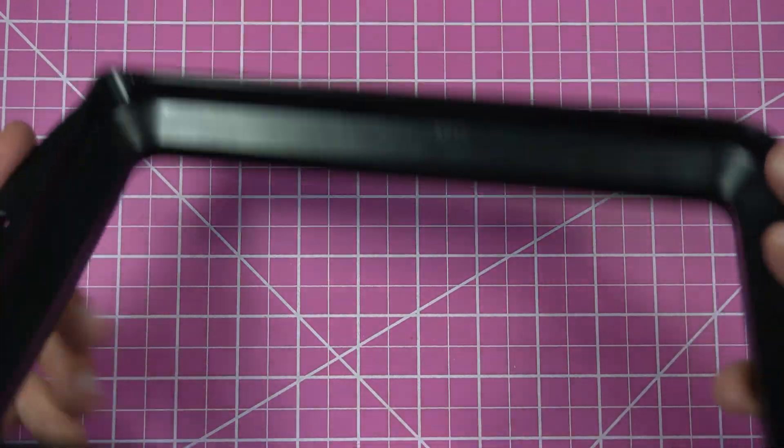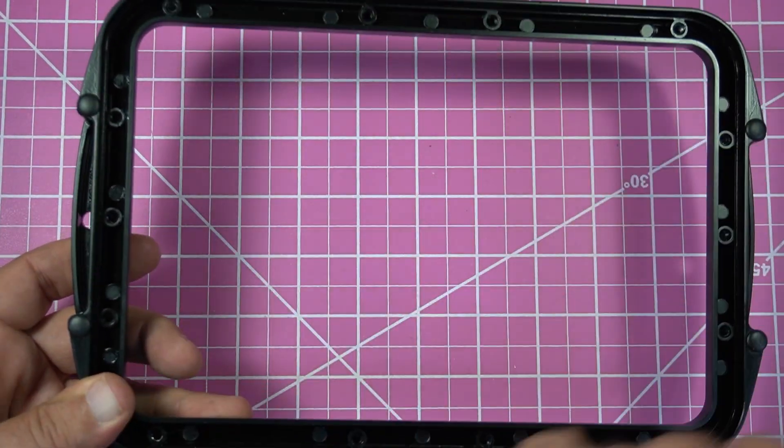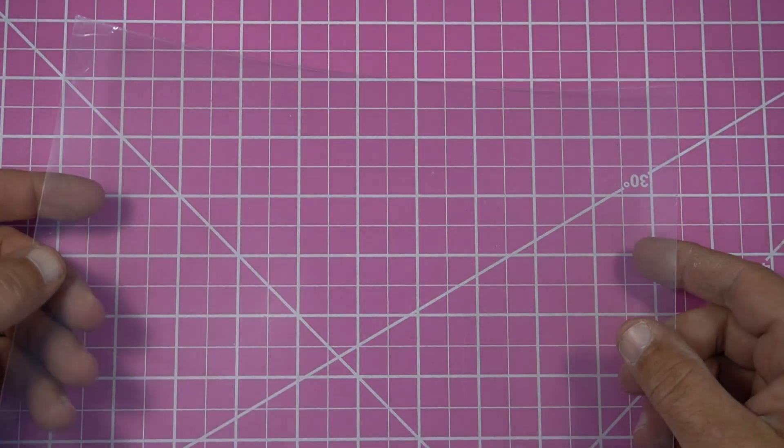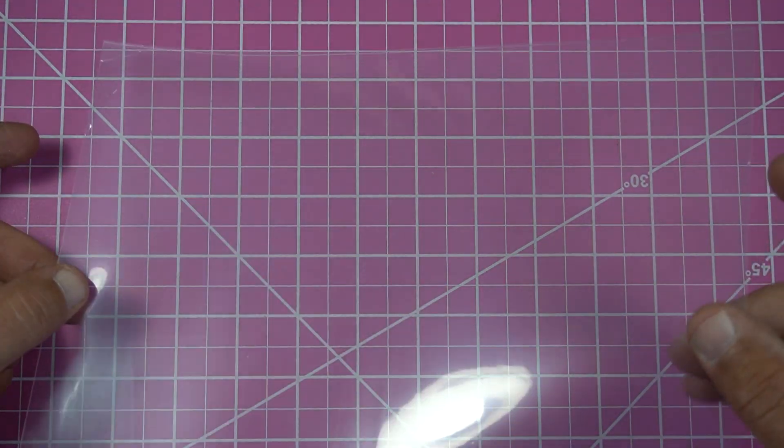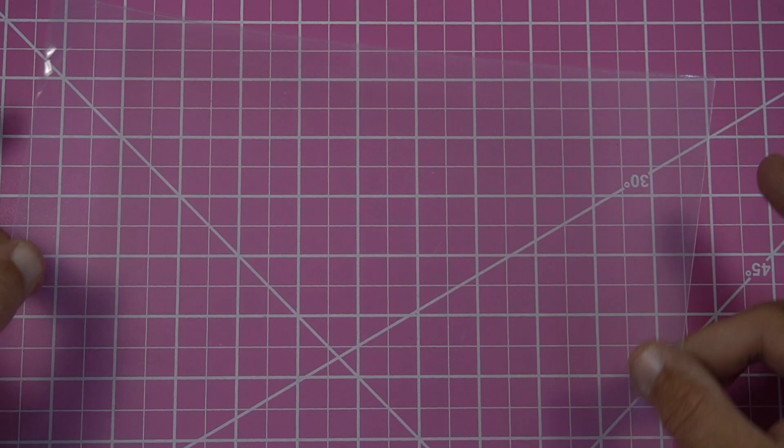Make sure you got all that excess resin off, especially underneath here. And the most important thing we're going to need is our new piece of FEP, which is very hard to see on camera.